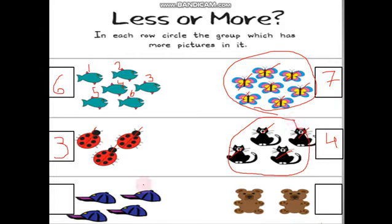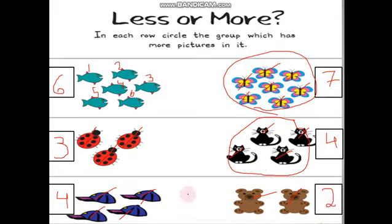Now the last example. We start counting the hats: one, two, three, four. And we write four. And we count the teddy bears: one, two. And we write two. Then I ask myself, who is more — the hats or the teddy bears? Excellent! The hats are more. So I circle the hats.